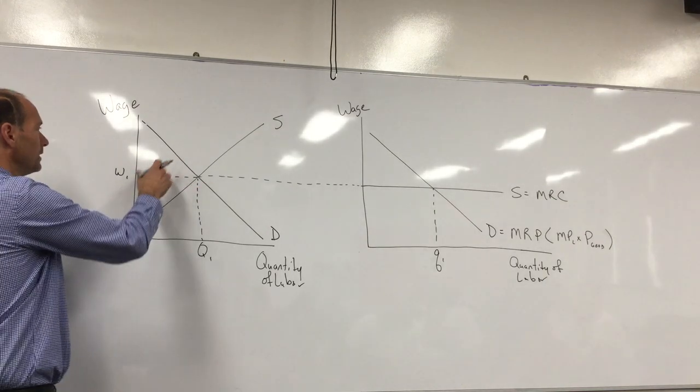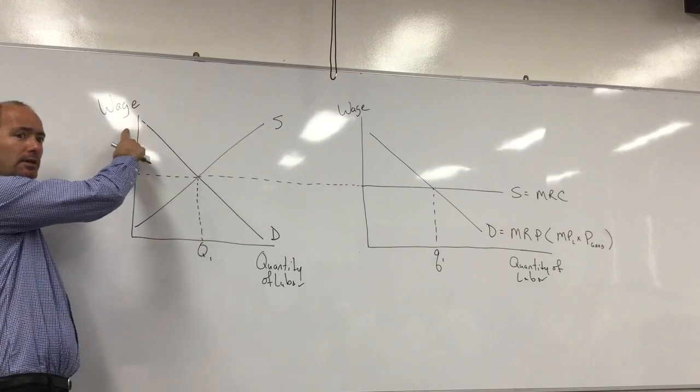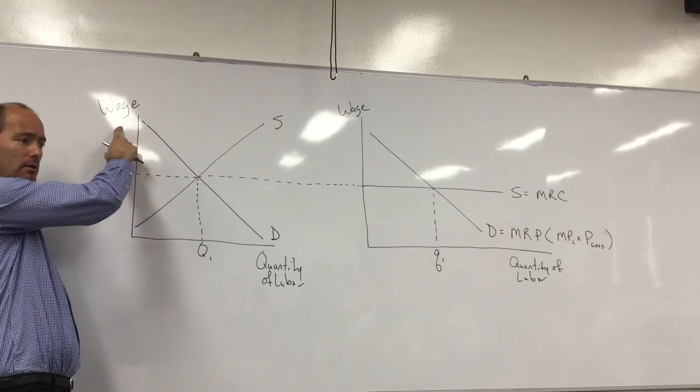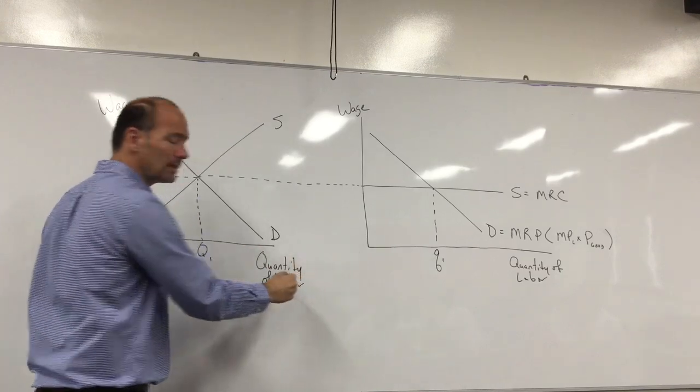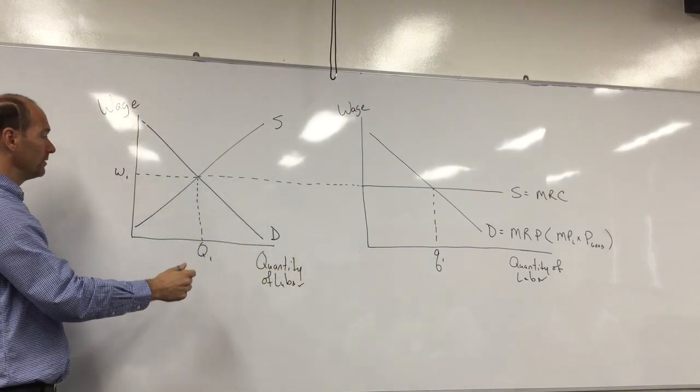In the labor market, we have on the vertical axis the price of labor, which is the wage or wage rate, and on the horizontal axis, the quantity of labor.